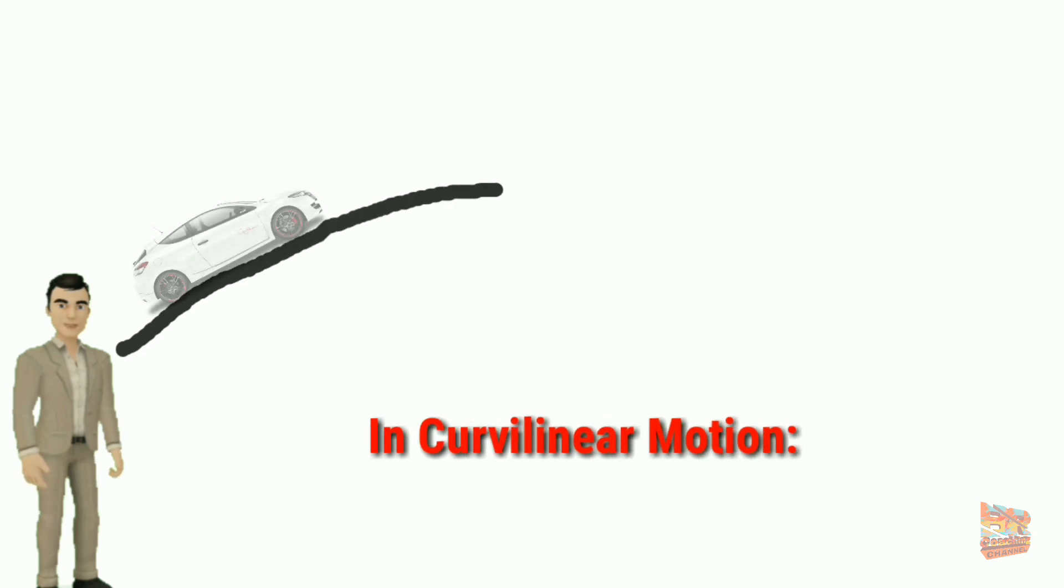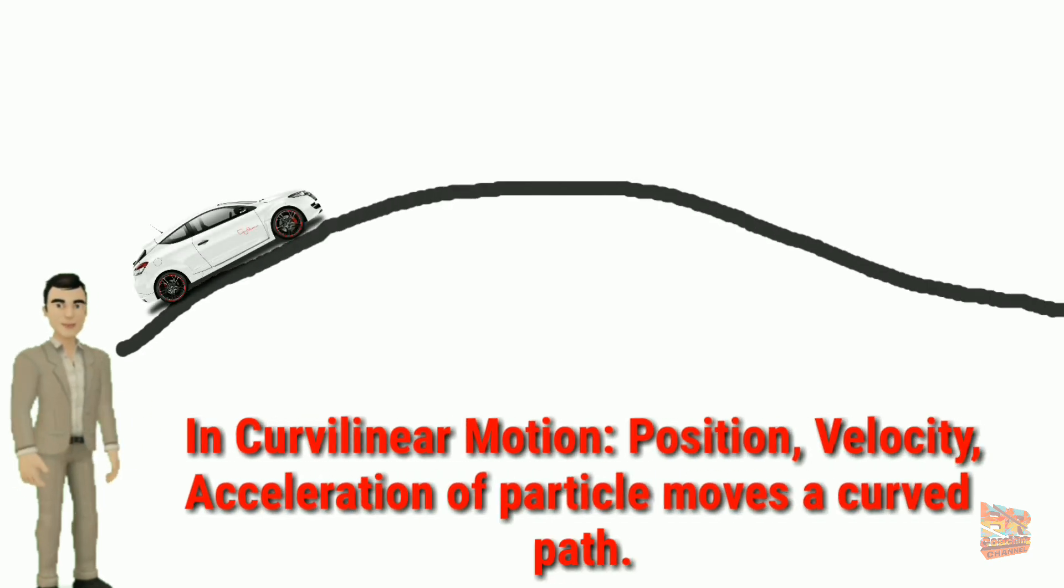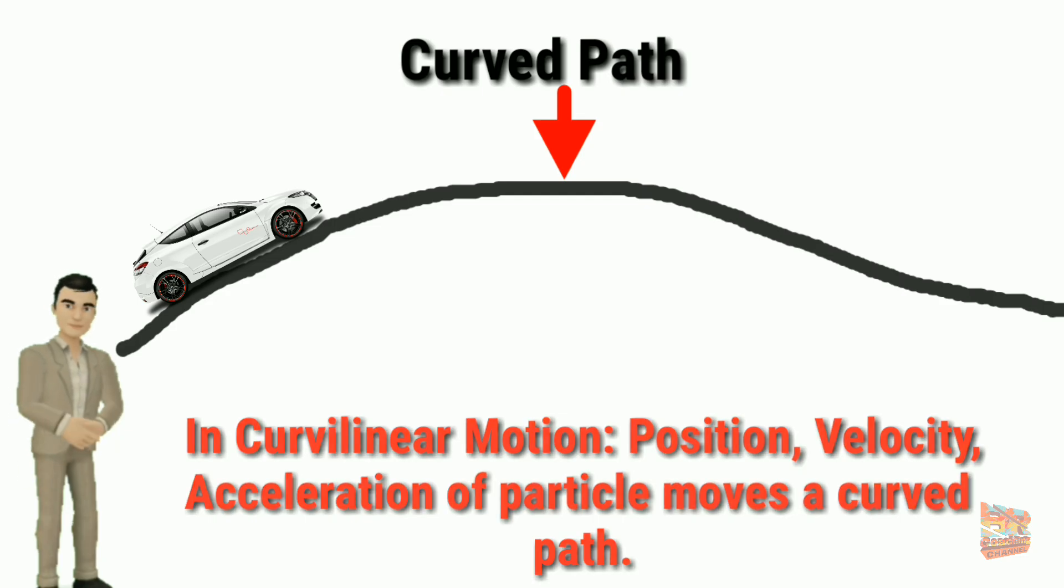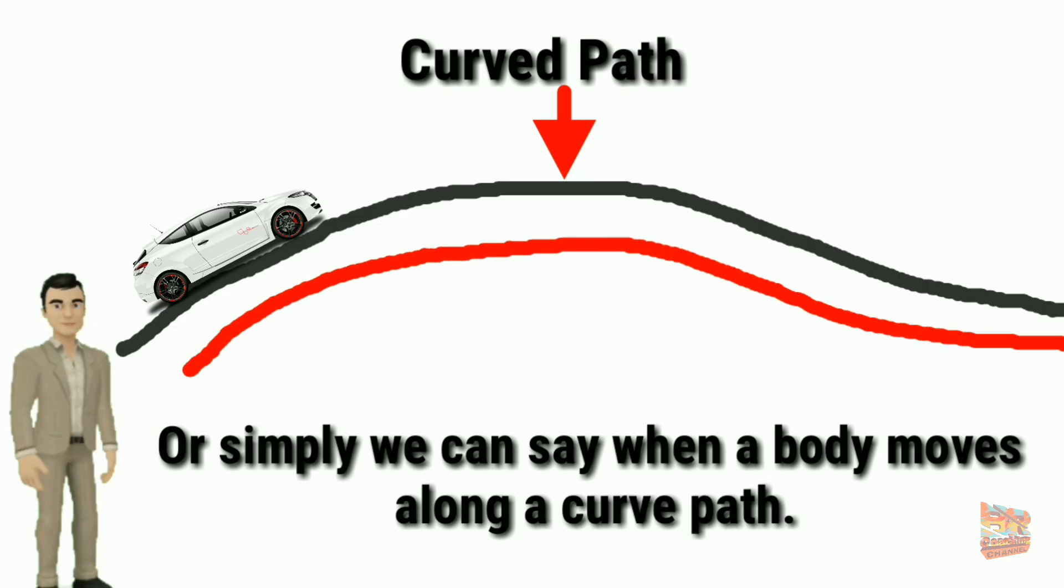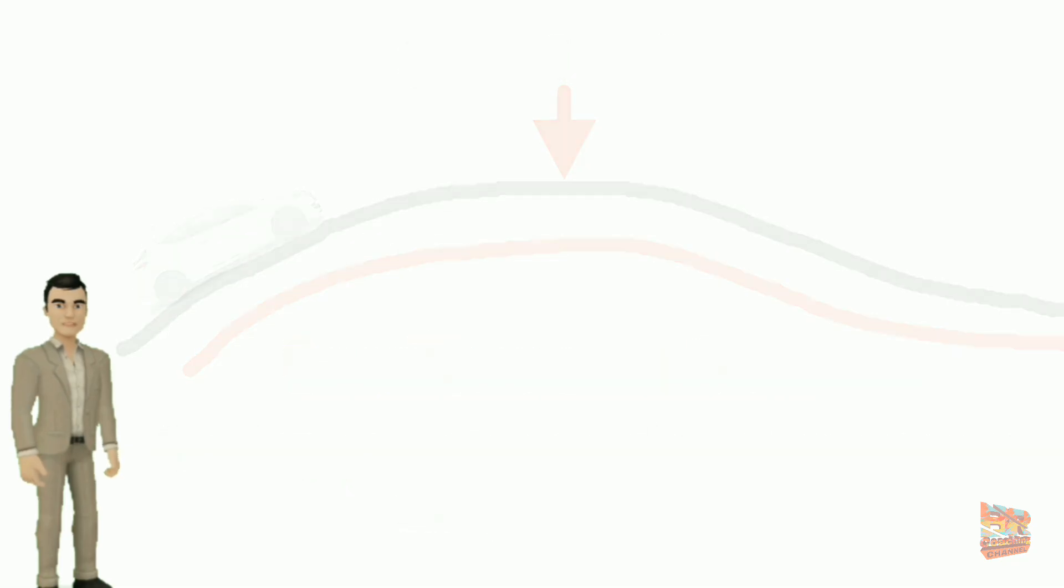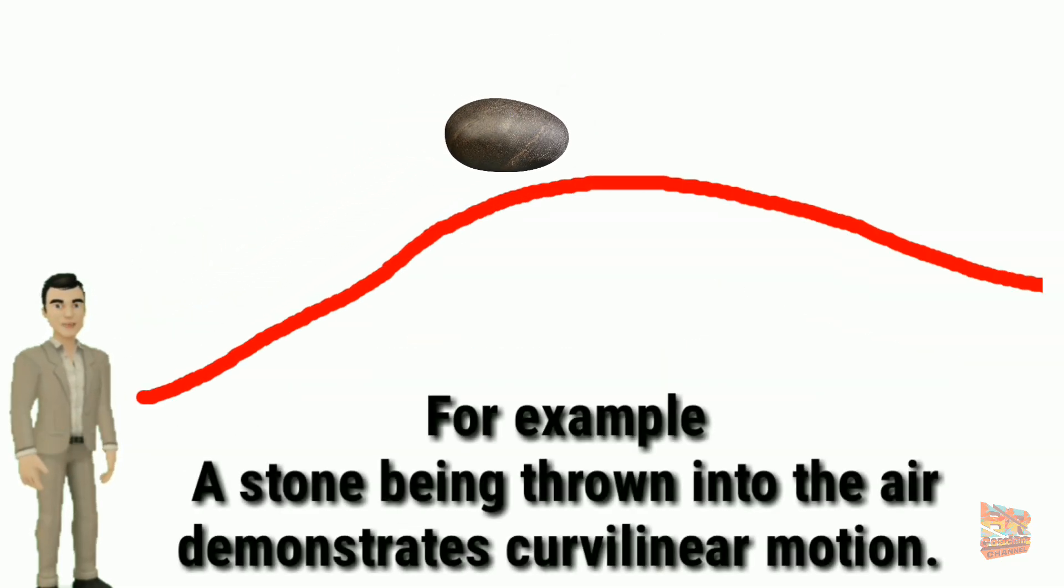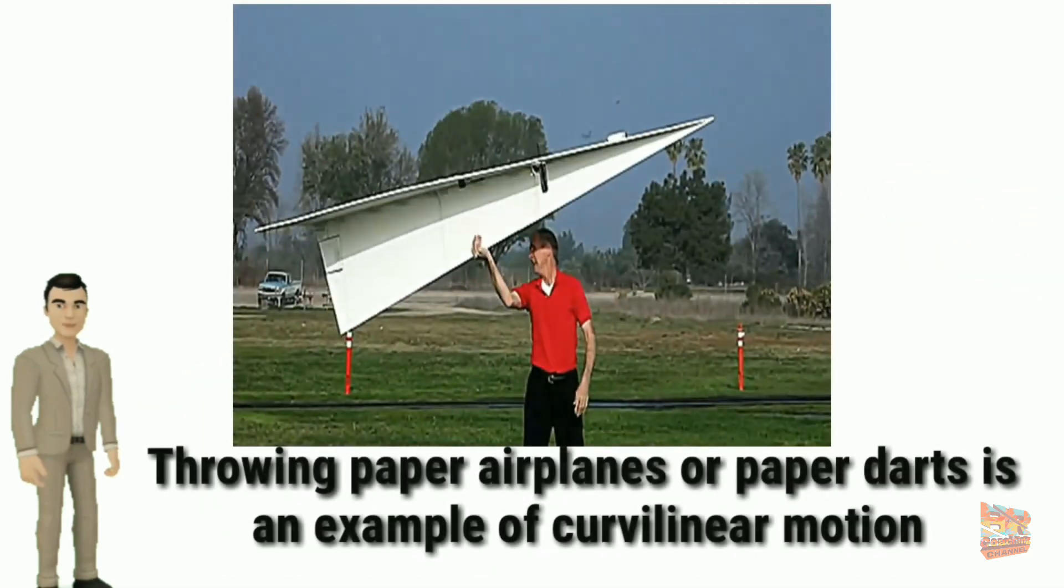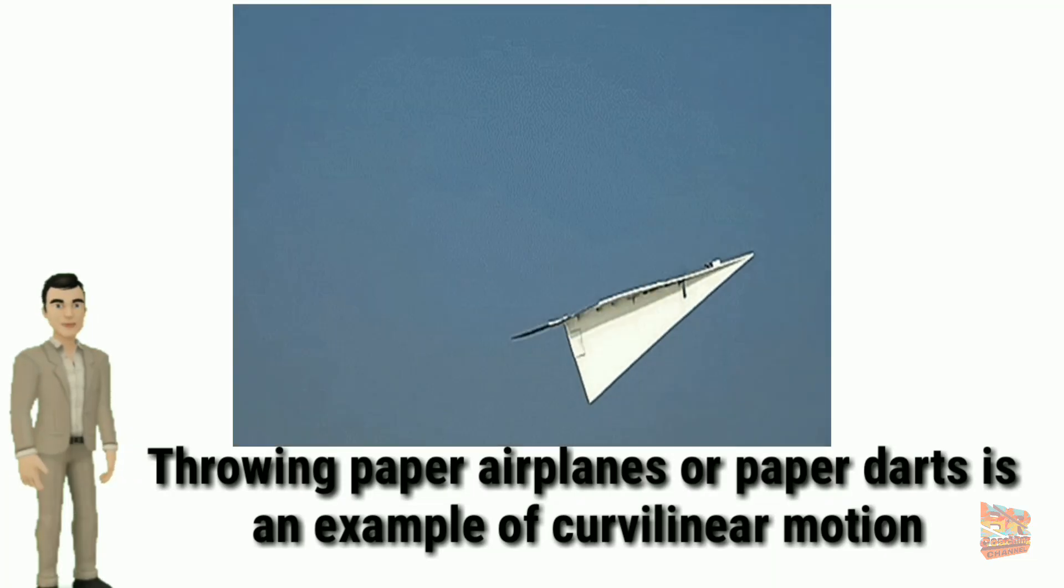Now, in curvilinear motion, position, velocity, and acceleration of particle move along a curved path. Or simply we can say when a body moves along a curved path, the motion which is produced is called curvilinear motion. For example, a stone being thrown into the air demonstrates curvilinear motion, and throwing paper airplanes or paper darts is an example of curvilinear motion.